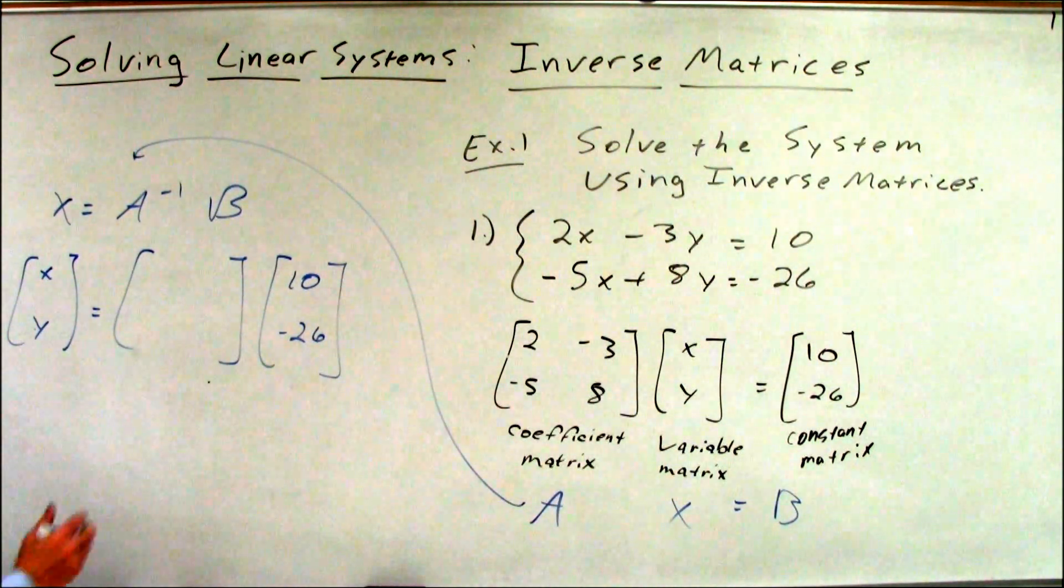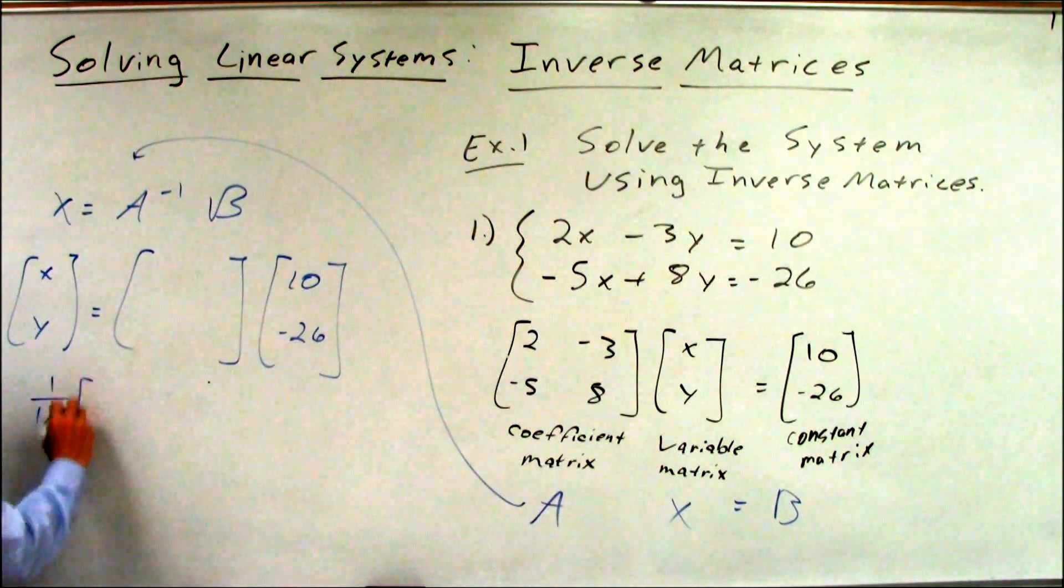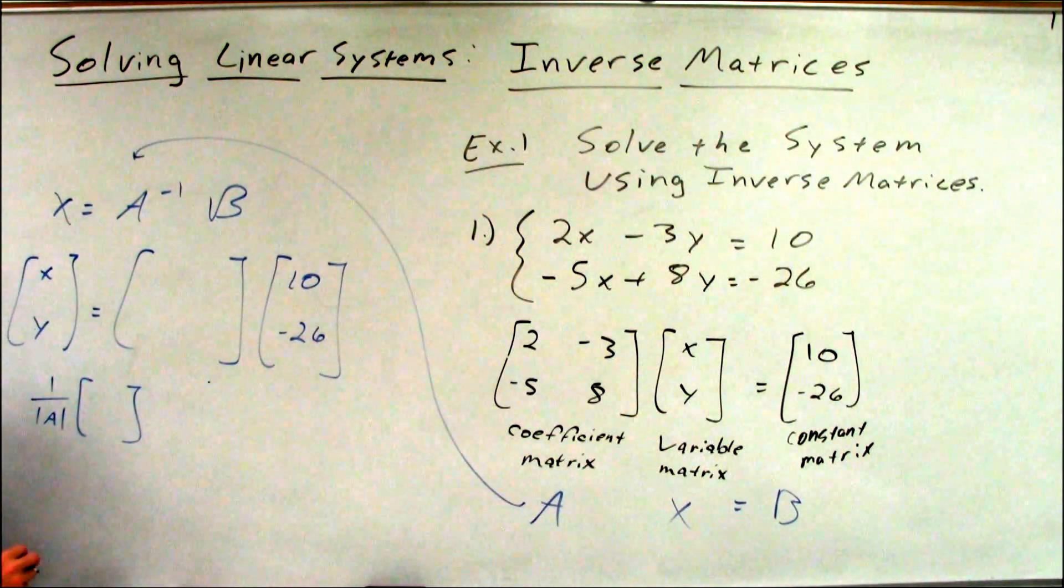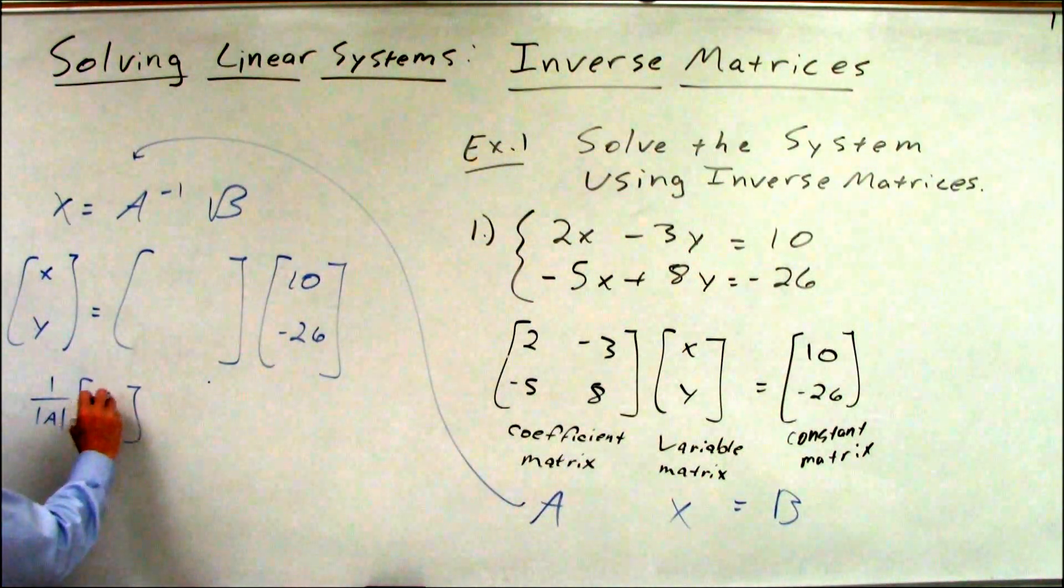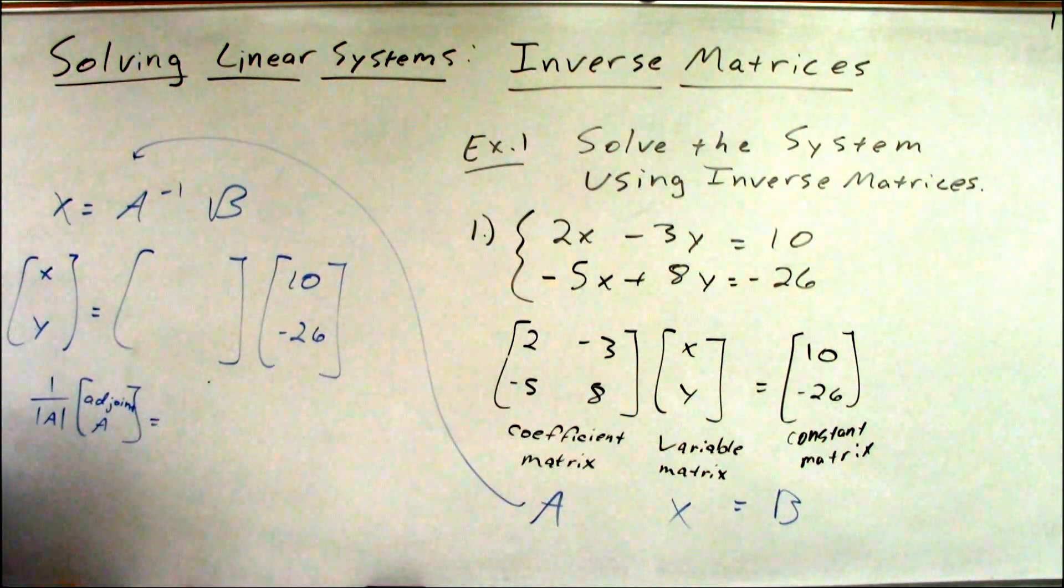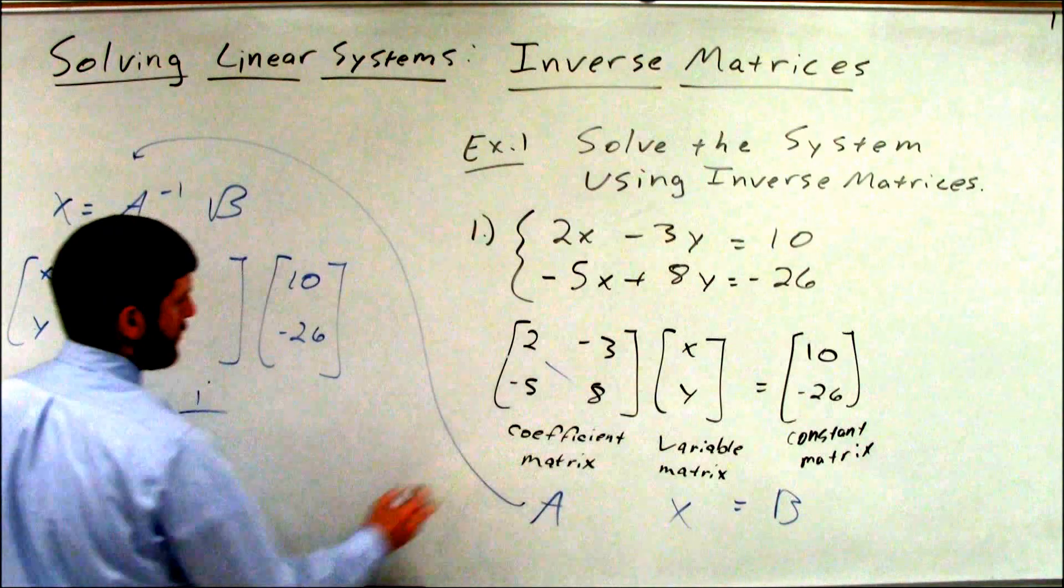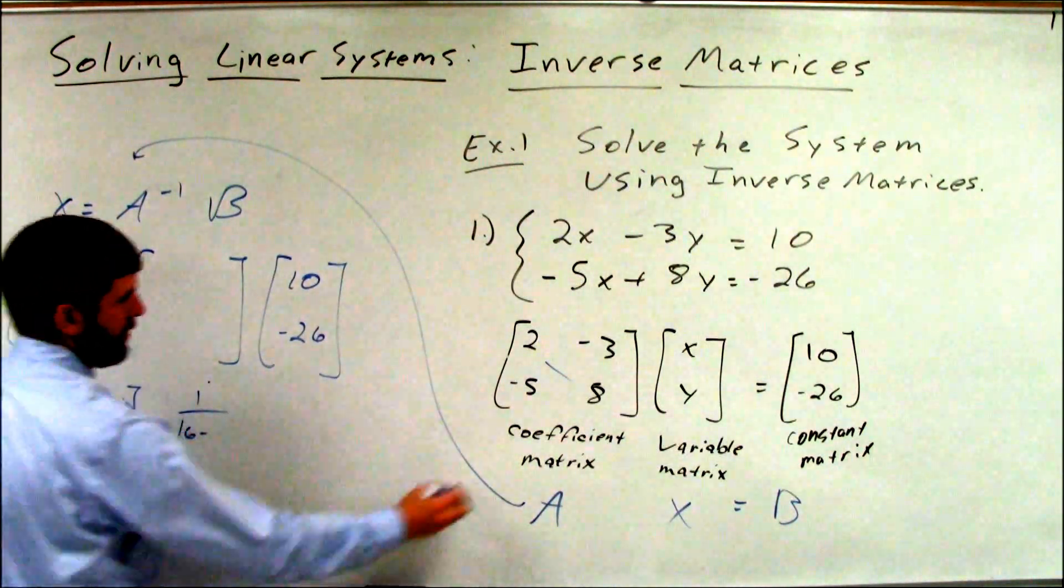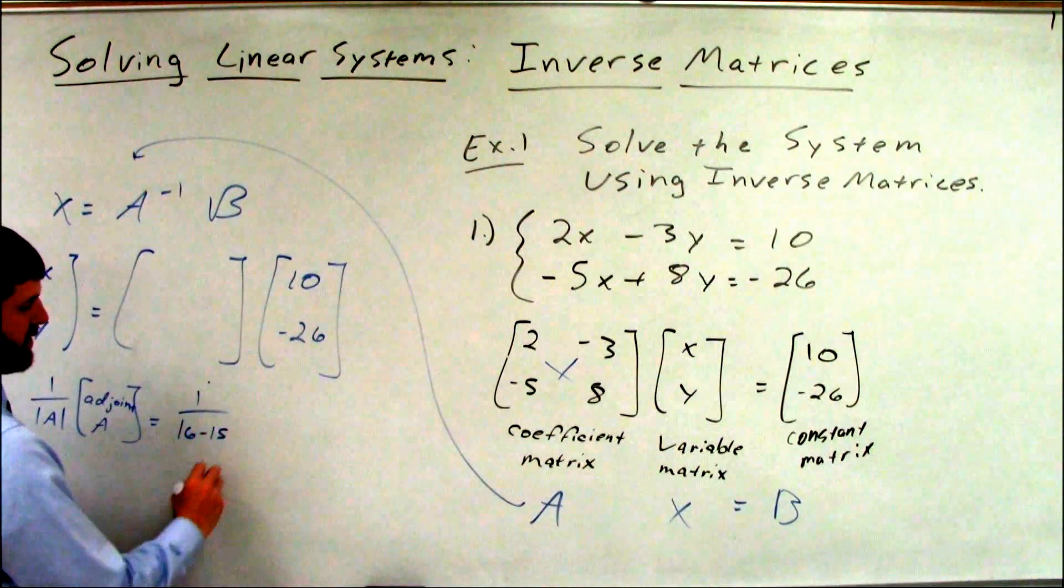Well, how do we find A inverse? We find A inverse by doing 1 over the determinant of A times the adjoint of A. Well, in this specific problem, adjoint of A. In this specific problem, the determinant is 16 minus negative, negative x positive 16 minus 15 is 1.